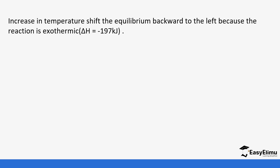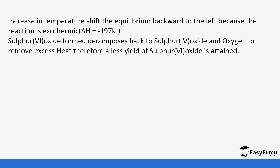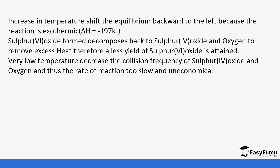Regarding temperature in the contact process: this is an exothermic reaction, which is not favored by increasing temperature. It is favored by reducing temperature so that the system works to increase it. Increasing temperature shifts the equilibrium backwards to the left, so less sulfur trioxide is produced. Lowering temperatures helps produce more sulfur trioxide as the system works to restore the original temperatures. However, low temperatures also cause the collision frequency to decrease, slowing the rate of reaction, making it uneconomical.